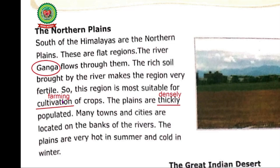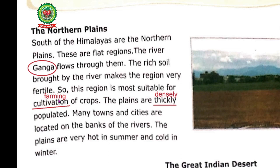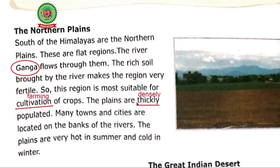Please write down the meaning of cultivation — Farming. Where are the Northern Plains located? The Northern Plains are located to the south of the Himalayas. Why are the Northern Plains suitable for cultivation of crops? The Northern Plains are suitable for cultivation of crops because the soil is fertile here. The Plains are thickly populated — please write down the meaning of thickly — Densely.